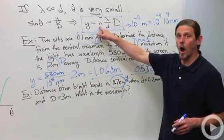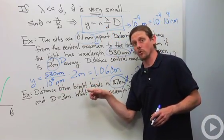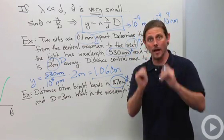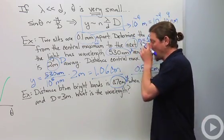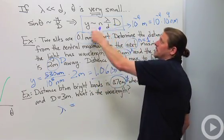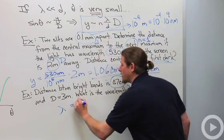We're going to use again n equals 1, because we're looking at bright bands that are right next to each other. So that means that we went from one of them to the next, n equals 1. So we'll say λ is equal to d times y over capital D, just like that.